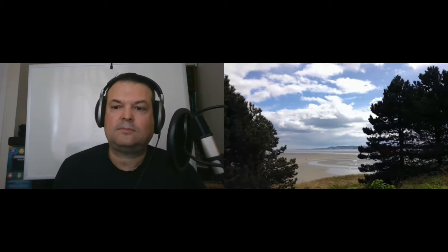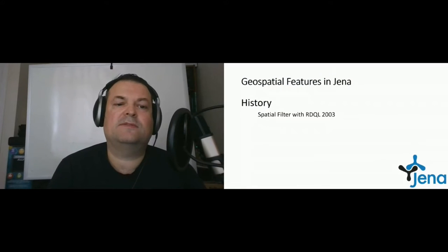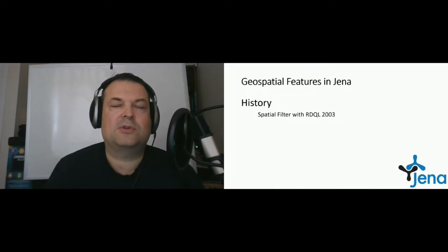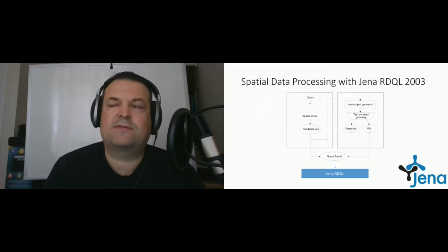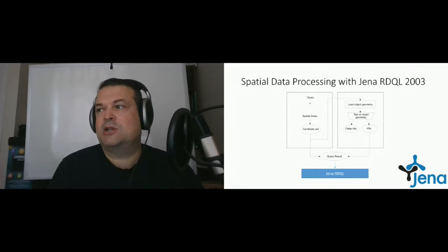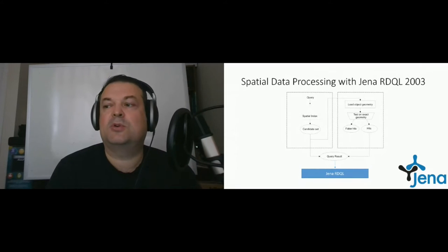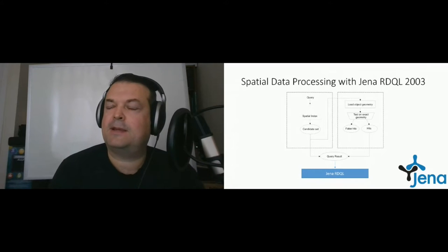A little bit of history on spatial support in Jena. In 2003, I introduced a spatial filter to the query language called RDQL in the Jena project. We took a query, extracted spatial features from a spatial index, and sorted the candidate set for either direct display or further evaluation in the geometry evaluation. Then, whether or not we had an intersection or spatial relationship between geometric features, we would forward that to the query result set, which was pushed to the Jena RDQL query processor.